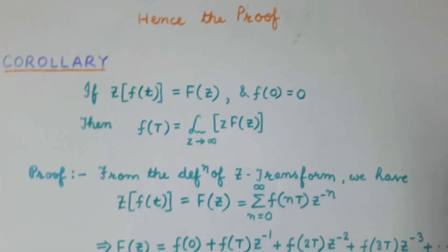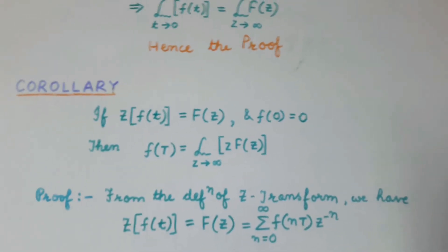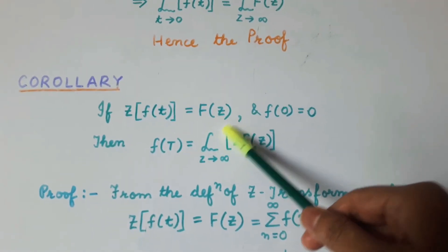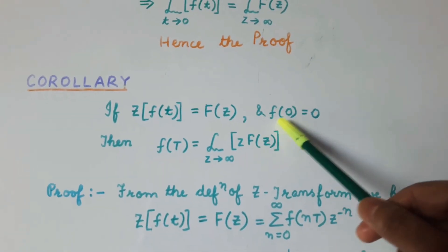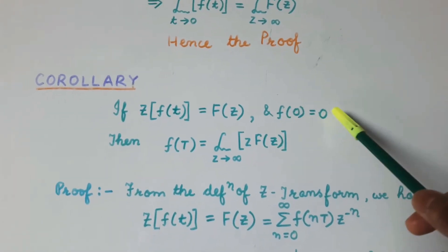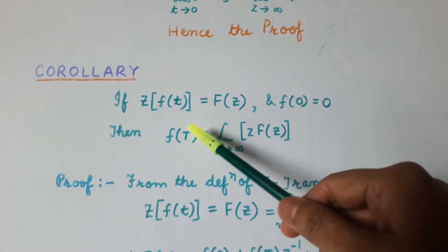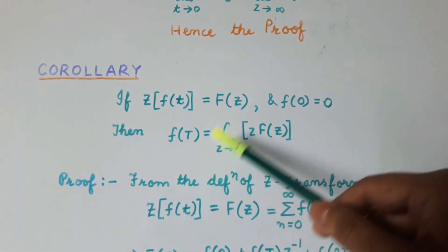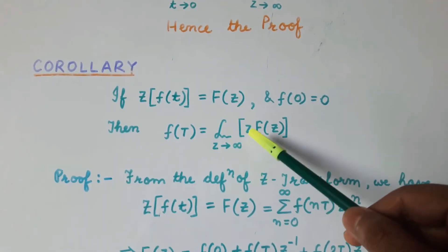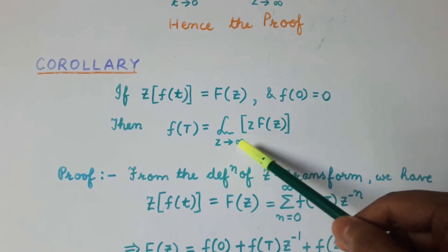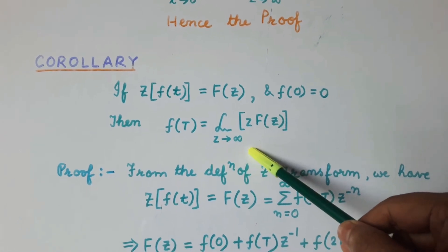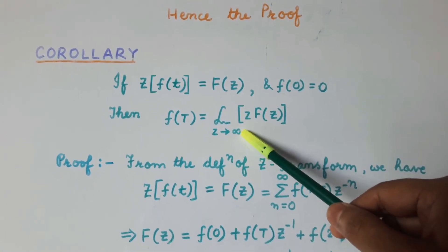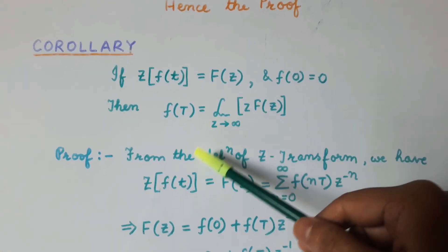Now let us see the corollary of this initial value theorem. This says that if the Z-transform of f(t) is equal to F(z) and f(0) is equal to 0, then f(T) will be equal to the limit of z·F(z) when z tends to infinity. Let us see the proof of this corollary.